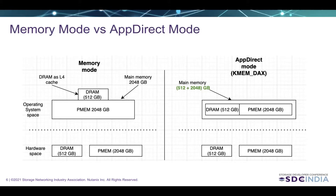Now let's look at AppDirect KMDAX mode. In AppDirect mode, as shown on the right side of the diagram, the main memory size will be equivalent to the sum of DRAM capacity and persistent memory capacity. So here we are not losing DRAM capacity. This is transparent to the programmer, but if required, the programmer can choose the memory type during memory allocation.